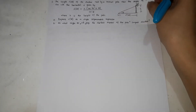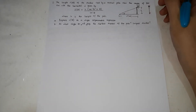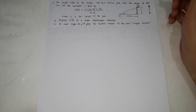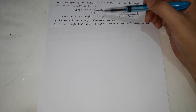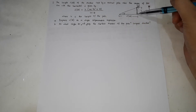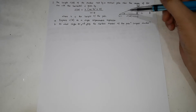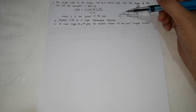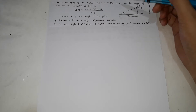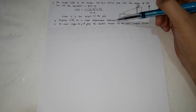We'll proceed with the problems. The first problem: the length S(θ) of the shadow cast by a vertical pole when the angle of the Sun with the horizontal is given by S(θ) = H·cos(90° + θ) / cos(θ), where H is the height of the pole. We need to express S(θ) as a single trigonometric expression.